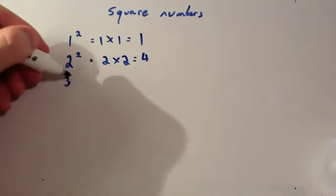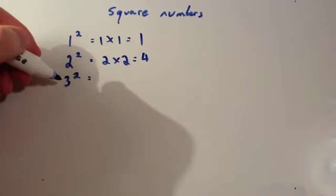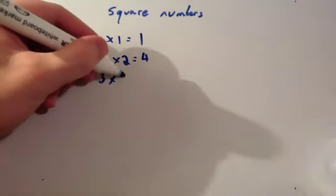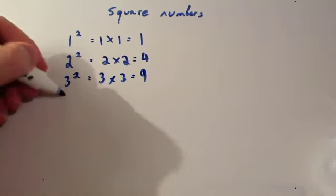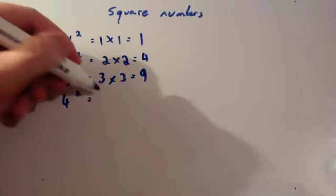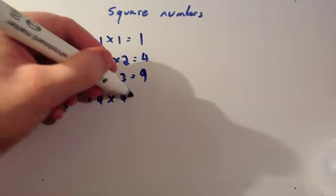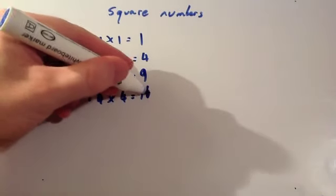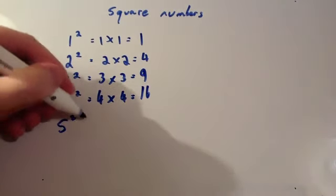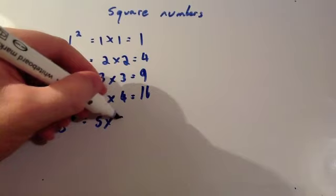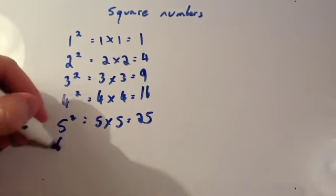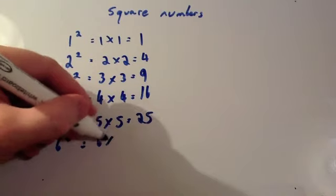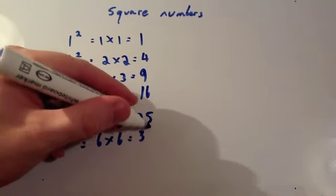If you wanted to do 3 squared, you multiply the 3 by itself. So, you do 3 times 3, which equals 9. 4 squared — 4 times 4 — equals 16. 5 squared — 5 times 5 — is 25. 6 squared — 6 times 6 — is 36.